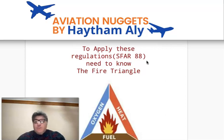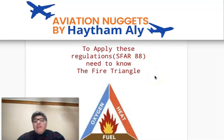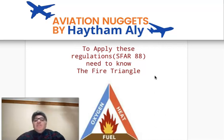A new system introduced into the aircraft is called the Nitrogen Generation System (NGS). This system is essentially a filter that takes bleed air from the pneumatic system, removes the water vapor and oxygen from the air, converts the bleed air into nitrogen, and allows this nitrogen to flow to the center tank to inert it.